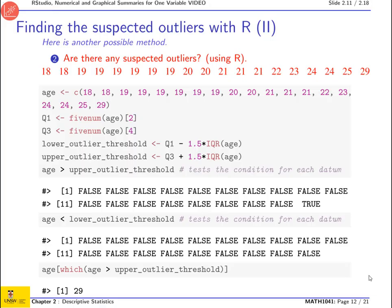Here is another way to find the suspected outliers using R. So the beginning is exactly the same. You calculated two thresholds. But then you add this command. So is age greater than the upper outlier threshold? So what R will do, it will take all the numbers in the list one by one and for each of them it will tell you whether the condition is satisfied. So here it's false for all of them except the last one. So this corresponds to that. Which means that age is greater than 27.75 only for the last one, and the last one is 29.